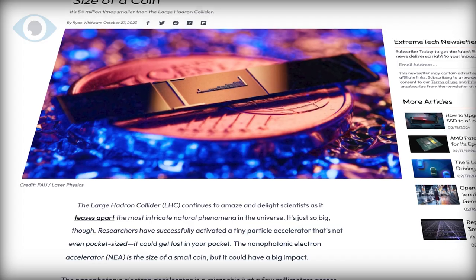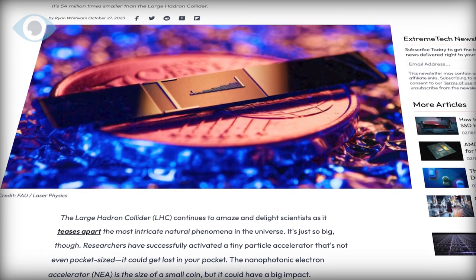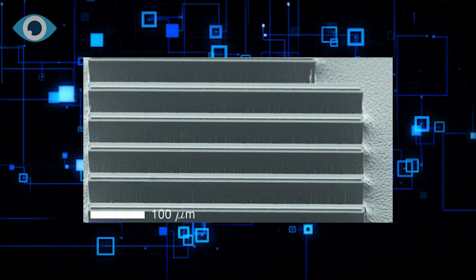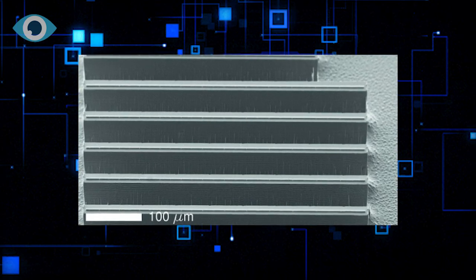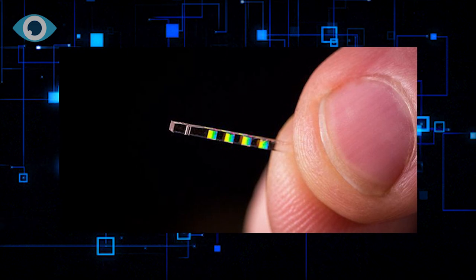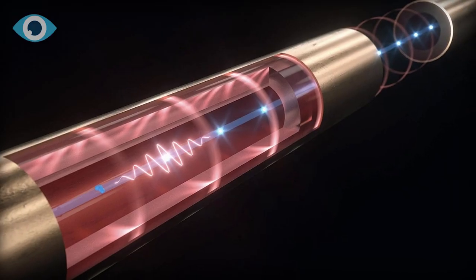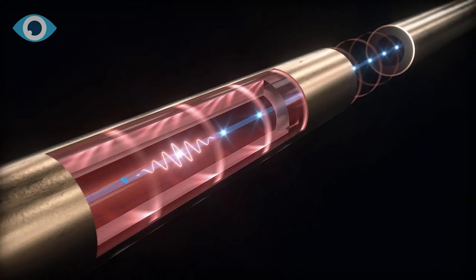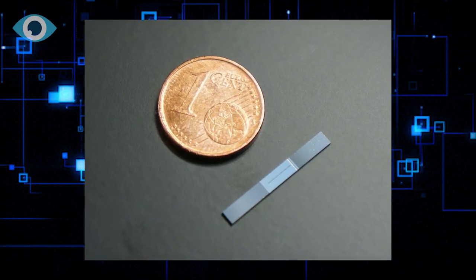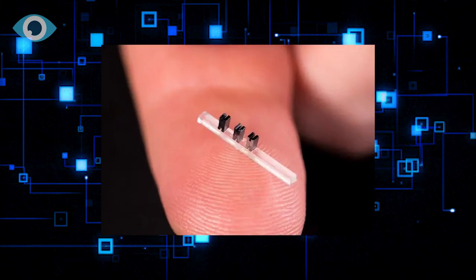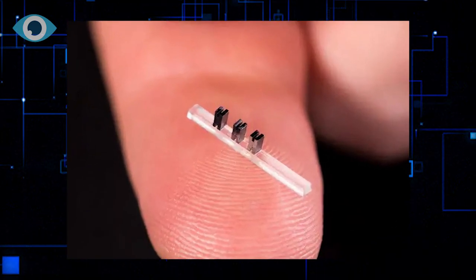The NEA is a cutting-edge device that consists of a miniature microchip containing an even smaller vacuum tube composed of thousands of individual pillars. Researchers have devised a method to accelerate electrons by directing miniature laser beams at these tiny pillars. Remarkably, the main acceleration tube within the NEA measures a mere 0.02 inches, or 0.5 millimeters, in length.